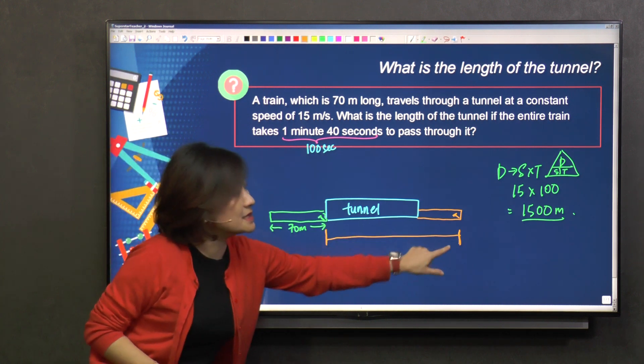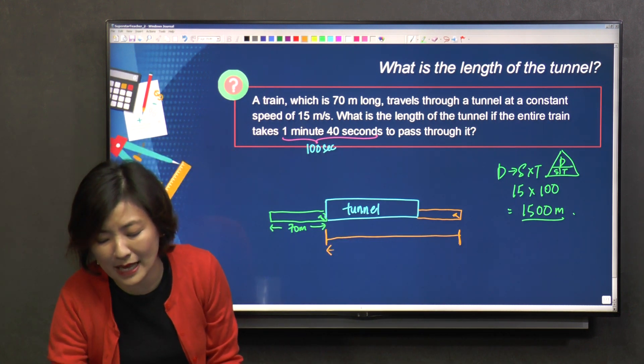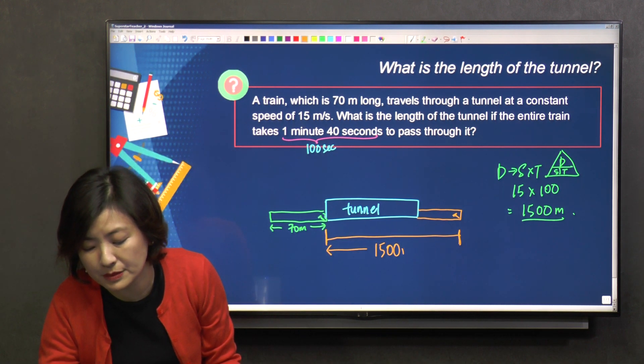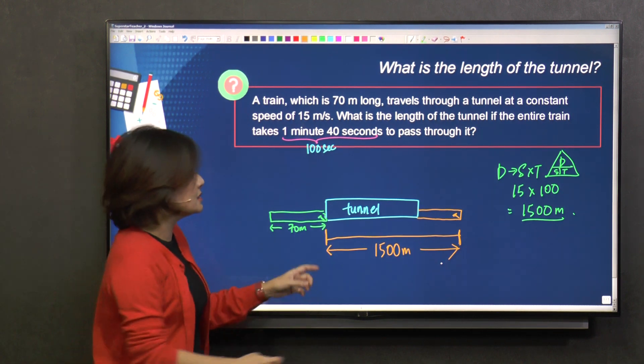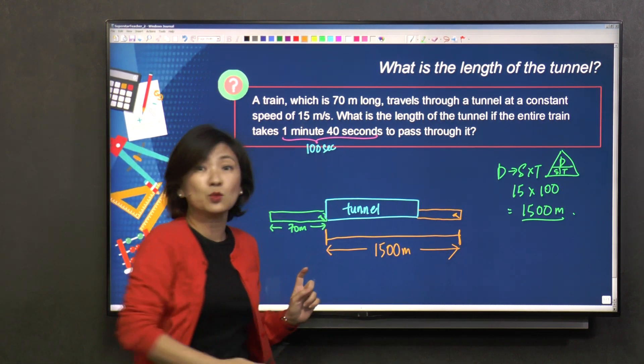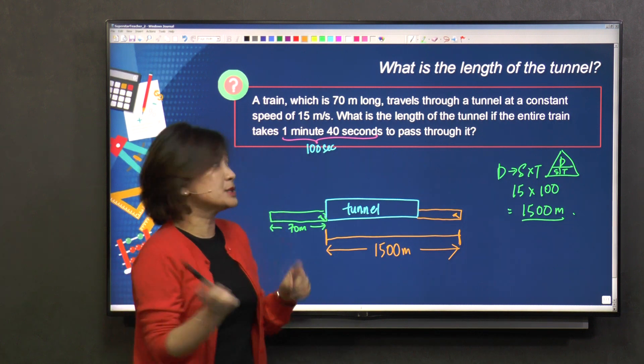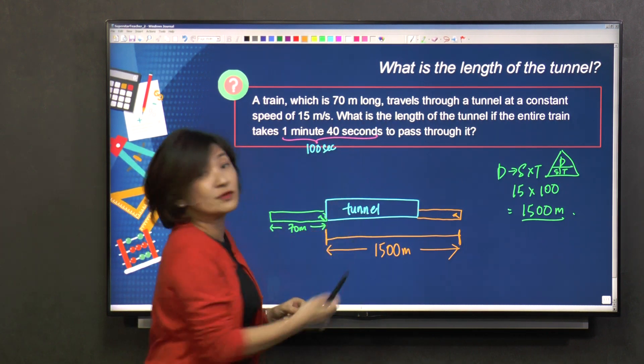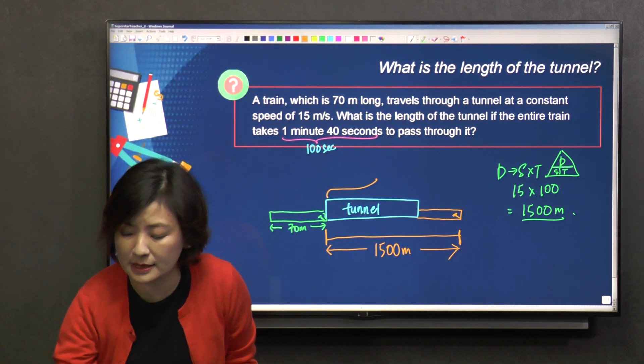Right, so what is this distance? This distance is 1,500 meters. This is 1,500 meters. Is that what the question is asking for? The question is asking for the length of the tunnel. It's just here that the question wants.